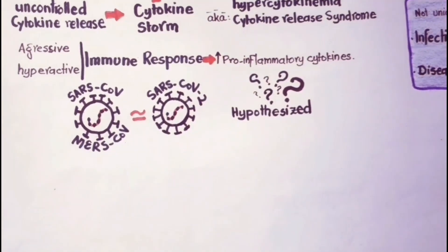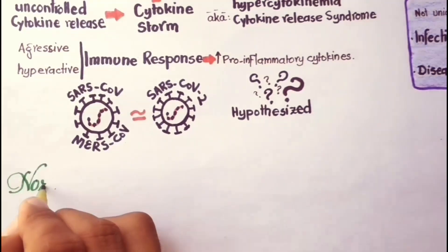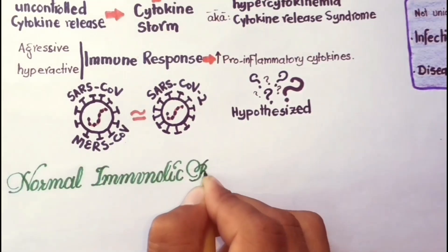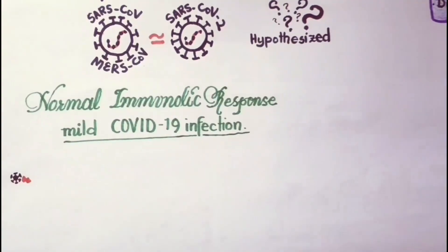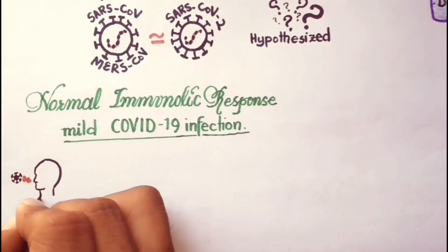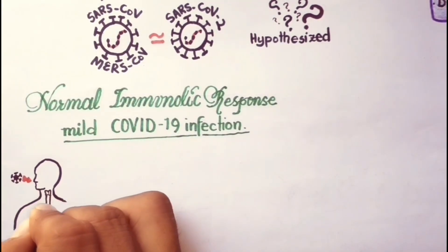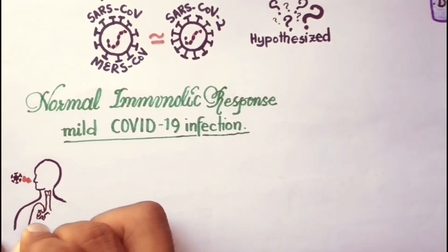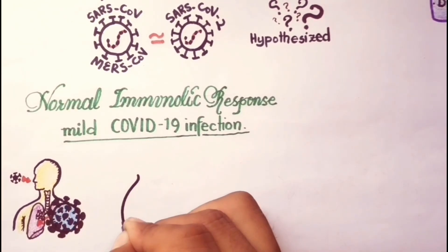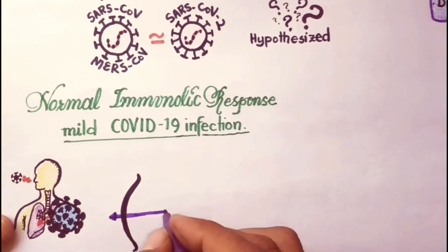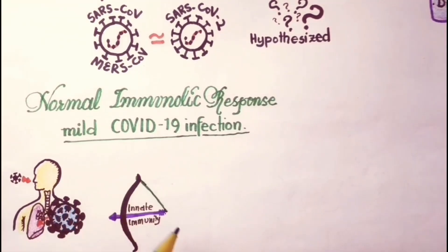Here, we will first review and compare the possible pathophysiology mechanism of mild infection and severe infection in young and elderly adults with COVID-19 respectively. First, let's look at normal immunological responses in young adults with mild COVID-19 infection. Initiation of the immune response against invading coronavirus begins with direct infection of the bronchi and bronchial epithelium in the lungs. Antigen-independent innate immunity provides the first line of leukocyte defense against microorganisms.